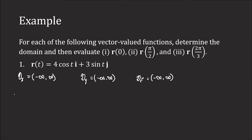Now if we go ahead and evaluate r(0), all we do is put 0 everywhere for t, just like we would a regular function. So we are evaluating the two component functions at 0. We have 4cos(0)î plus 3sin(0)ĵ. Cosine of 0 is 1 and sine of 0 is 0, so r(0) is just 4î.